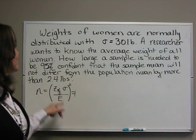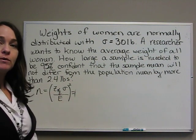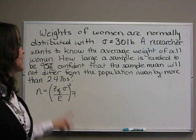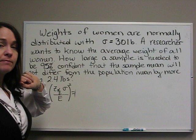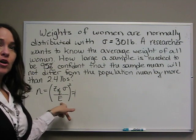Remember, e is the margin of error. z sub alpha over 2 we've dealt with when finding confidence intervals, so that's just a z-score. Sigma is always going to be given, as is e, our margin of error.